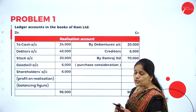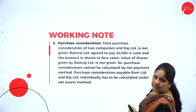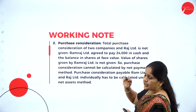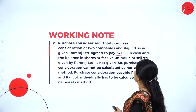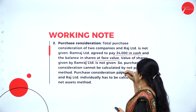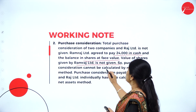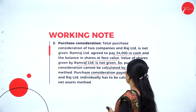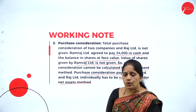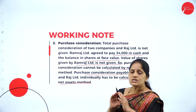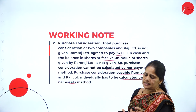Before we start the problem, we have to calculate the purchase consideration. The total purchase consideration of the two companies is not given. Ramaraja Limited agreed to pay 24,000 in cash and the balance in shares at face value, but the value of shares given by Ramaraja Limited is not given. So purchase consideration cannot be calculated by net payment method — it has to be calculated under the net asset method, since the mode of payment is not complete.